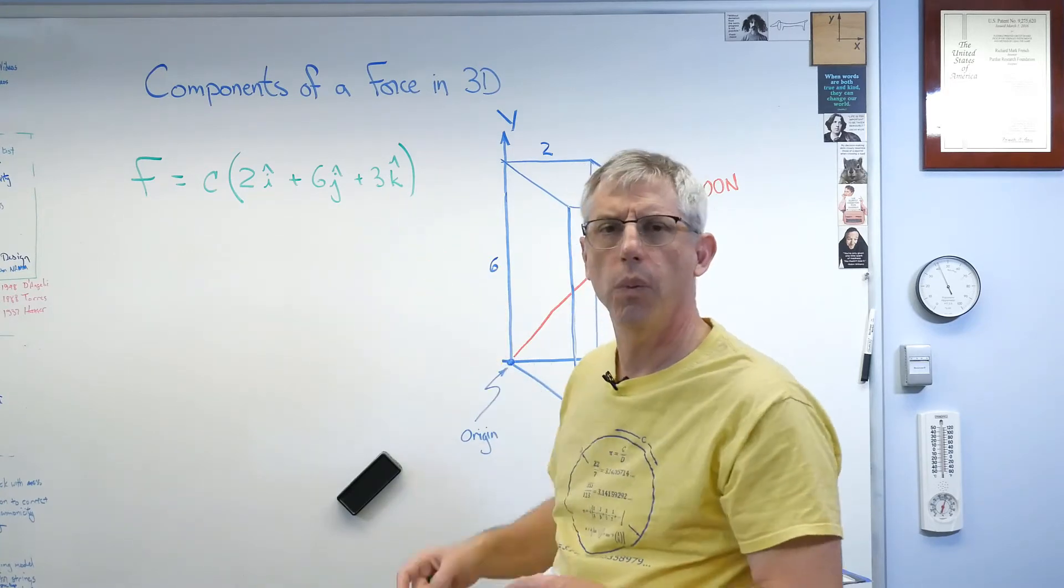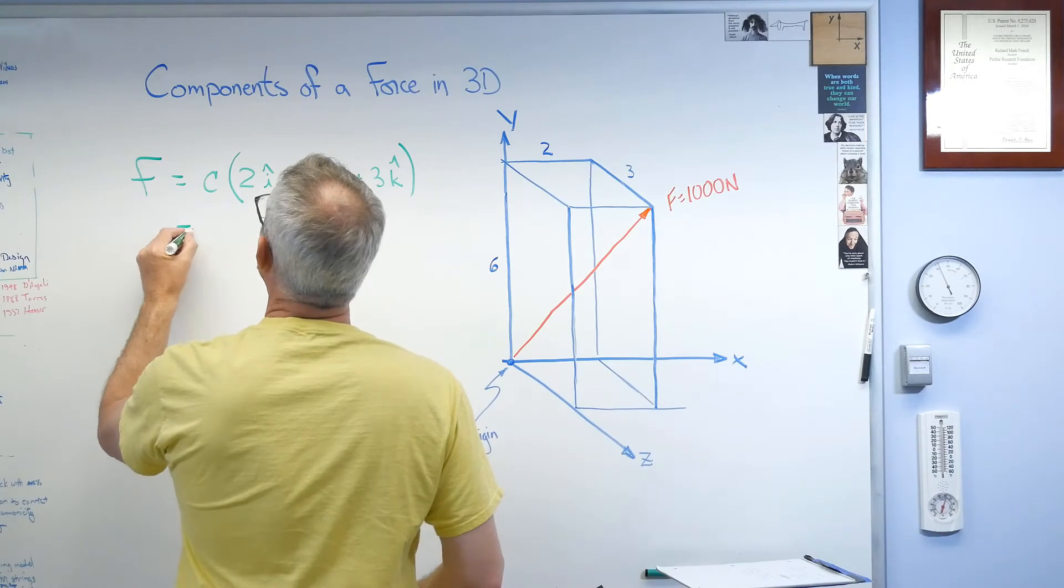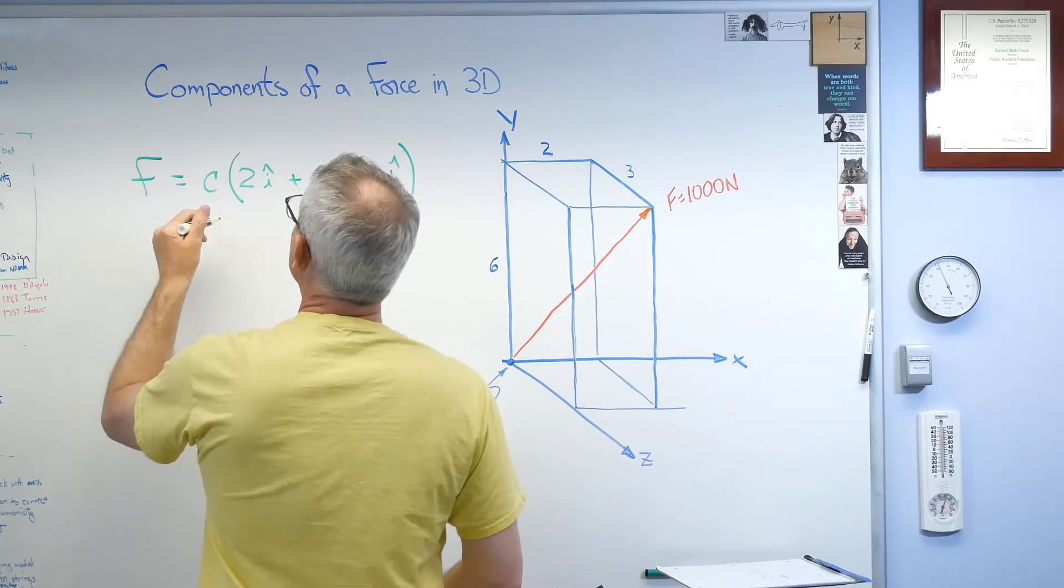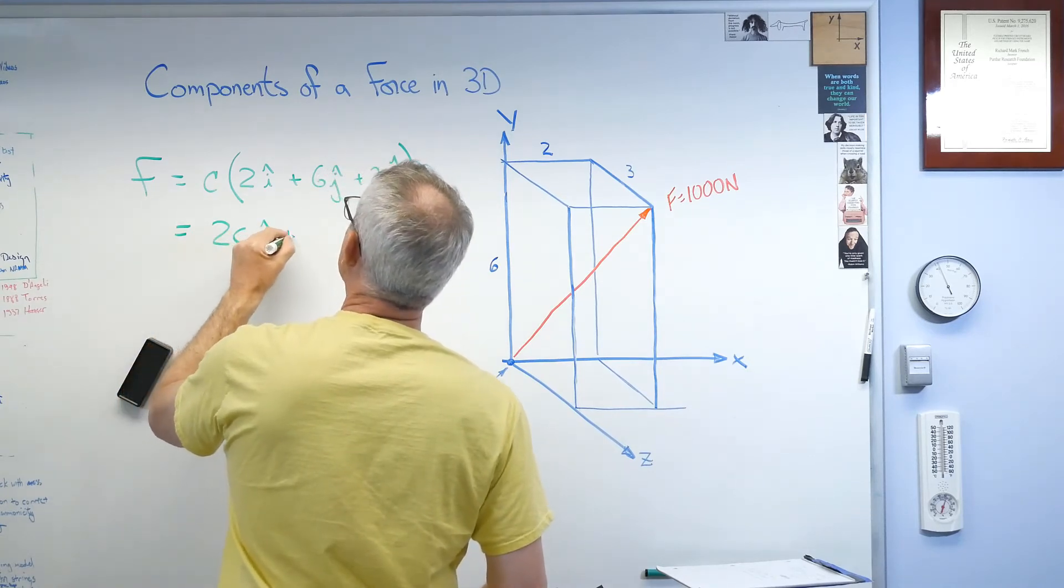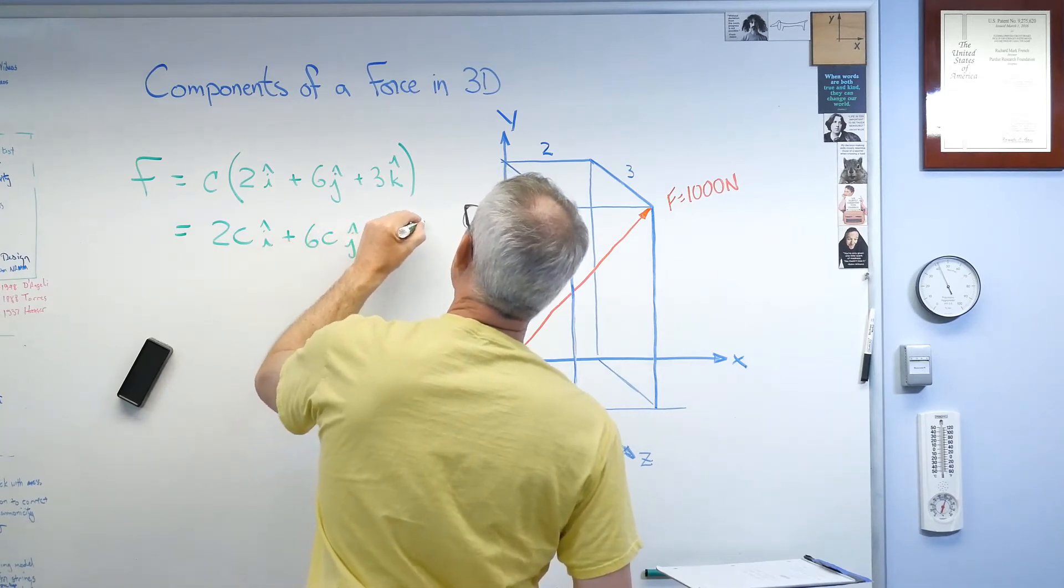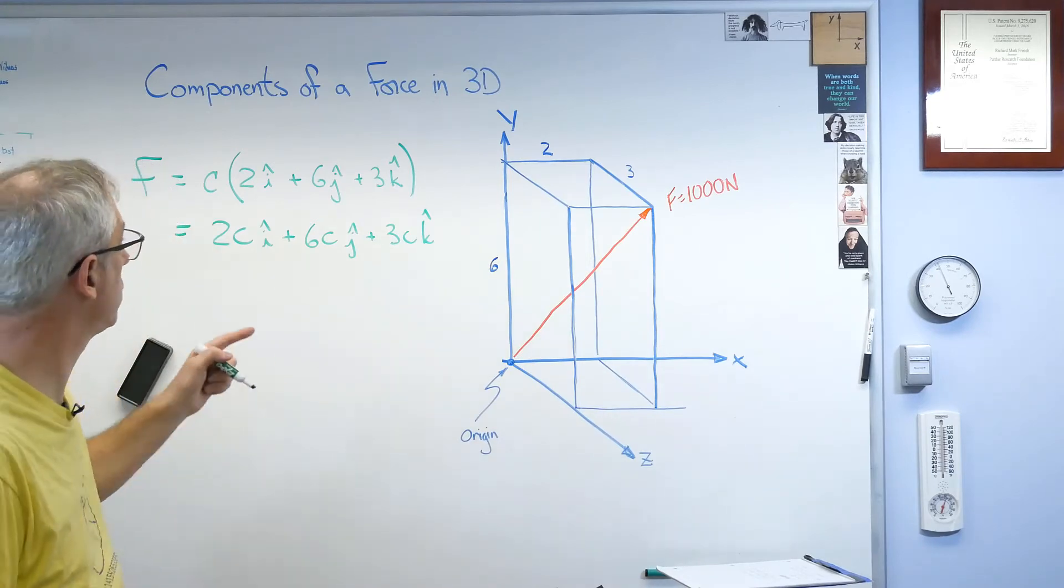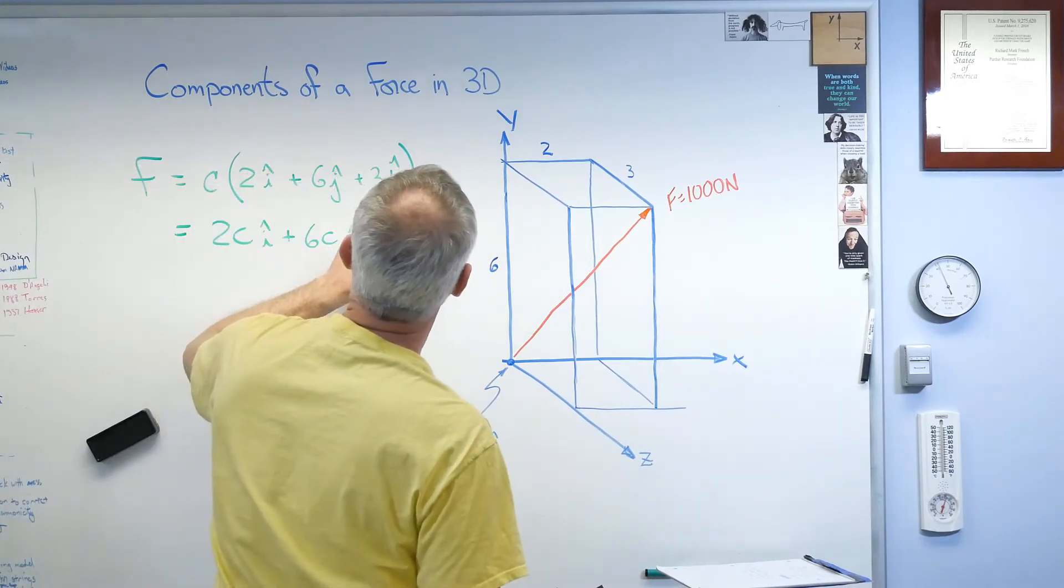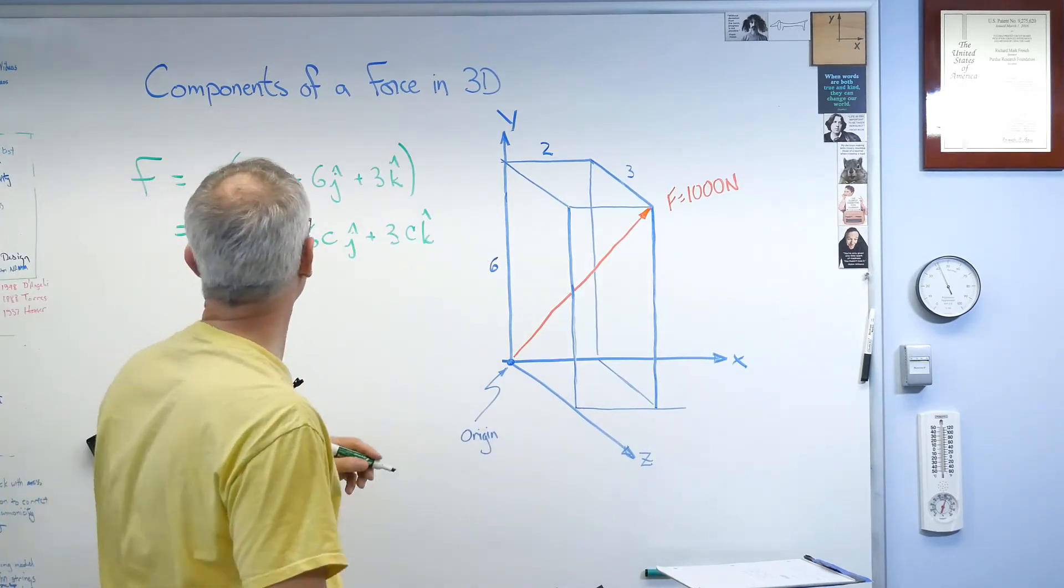All right. Well, what happens if we expand that out a little bit. So 2ci plus 6cj plus 3ck. All right. There it is. I put the c inside of it now. Now, I know the magnitude of it is 1,000.